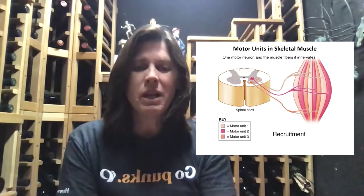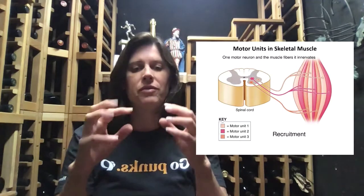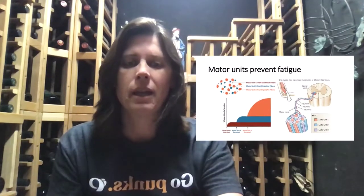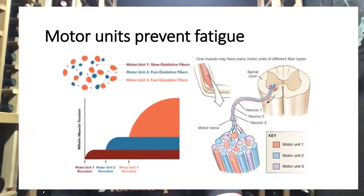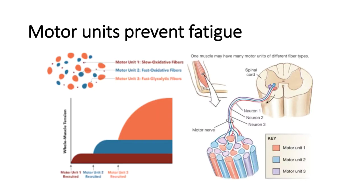Motor units can also help prevent fatigue because we don't necessarily have to fire every motor unit at the same time. This asynchronous firing of motor units can really help prevent fatigue. Fatigue in our muscles means the inability to maintain muscle tension — something is going on within the cells so that cross bridges can't continue their power strokes.